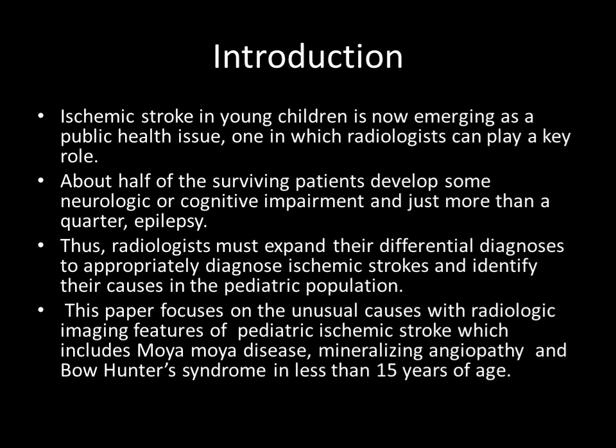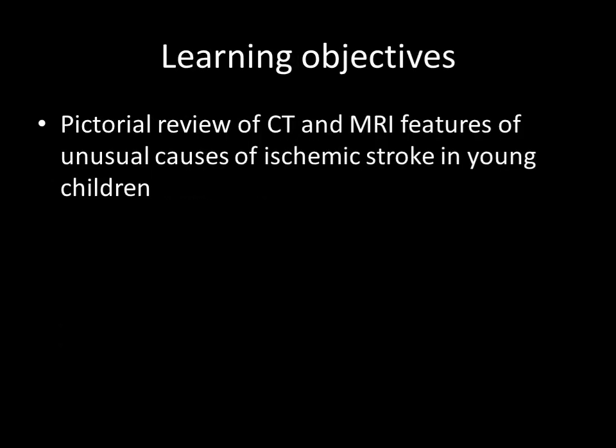This paper focuses on the unusual causes of radiologic imaging features of pediatric ischemic stroke, which includes Moya-Moya disease, mineralizing angiopathy, and Bowhunter syndrome in children less than 15 years of age. The learning objectives are the pictorial review of CT and MRI features of unusual causes of ischemic stroke in young children.